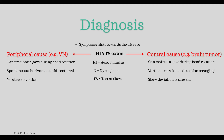For a peripheral cause, the patient cannot maintain their gaze during the head impulse test. There is often nystagmus that goes from side to side and is unidirectional. During the test of skew, there should not be any pathology. For a central cause, the patient can maintain their gaze during the head impulse test, so there is no pathology there. If there is nystagmus, it is not unidirectional but can be vertical, rotational, or direction-changing. Skew deviation can also be seen on the test of skew.